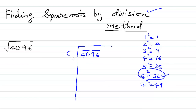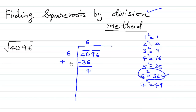So we will write 6, then 6, and 36 like this. Then we subtract 40 and 36 to get 4. Since we have written a 6 up top, we are going to write 6 below it and add 6 plus 6, which gives us 12. We write 12 leaving space to write one more digit.